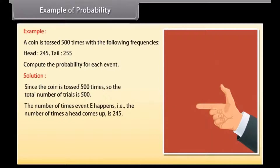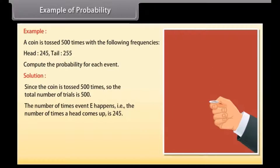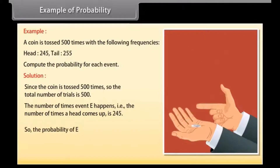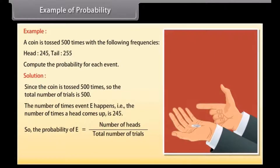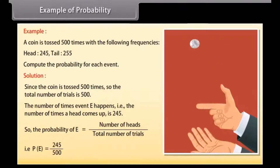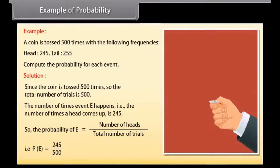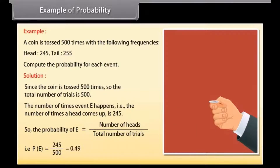The number of times event E happens — that is, the number of times a head comes up — is 245. So the probability of E is equal to number of heads upon total number of trials: P(E) = 245 upon 500 = 0.49.